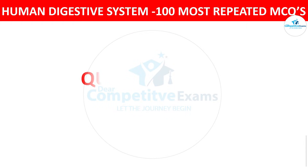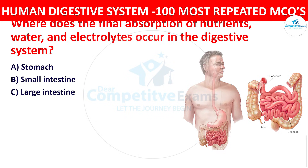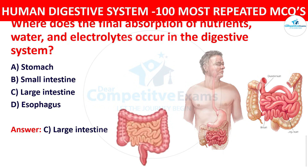Question number twenty-four: Where does the final absorption of nutrients, water, and electrolytes occur in the digestive system? The options are stomach, small intestine, large intestine, or esophagus. The right answer is large intestine. The large intestine is primarily responsible for the absorption of water, electrolytes, and some remaining nutrients.